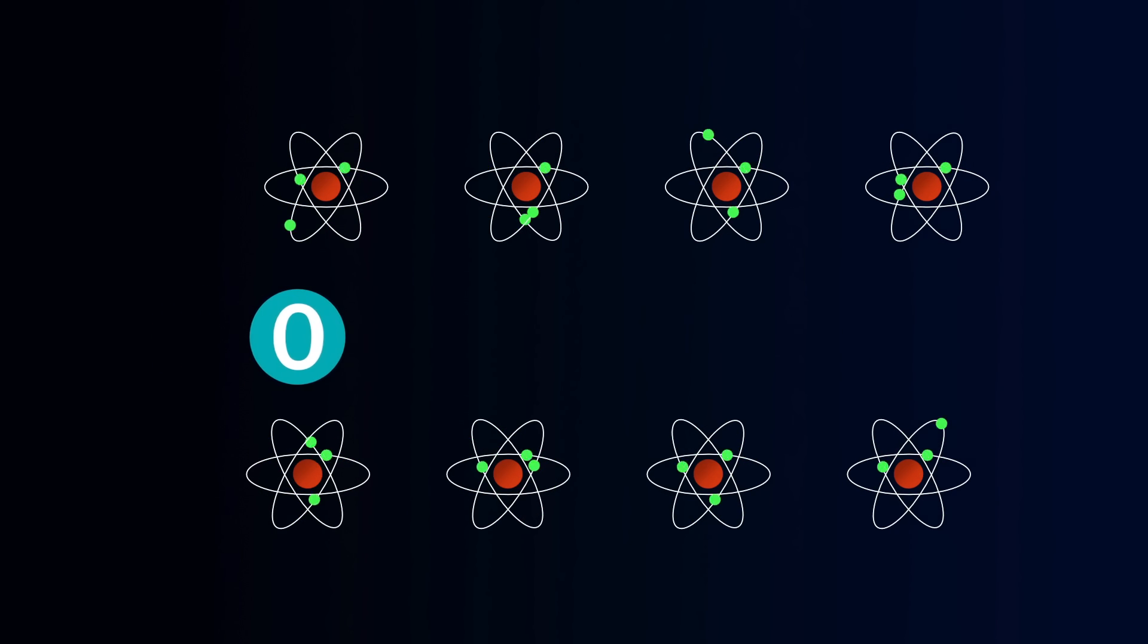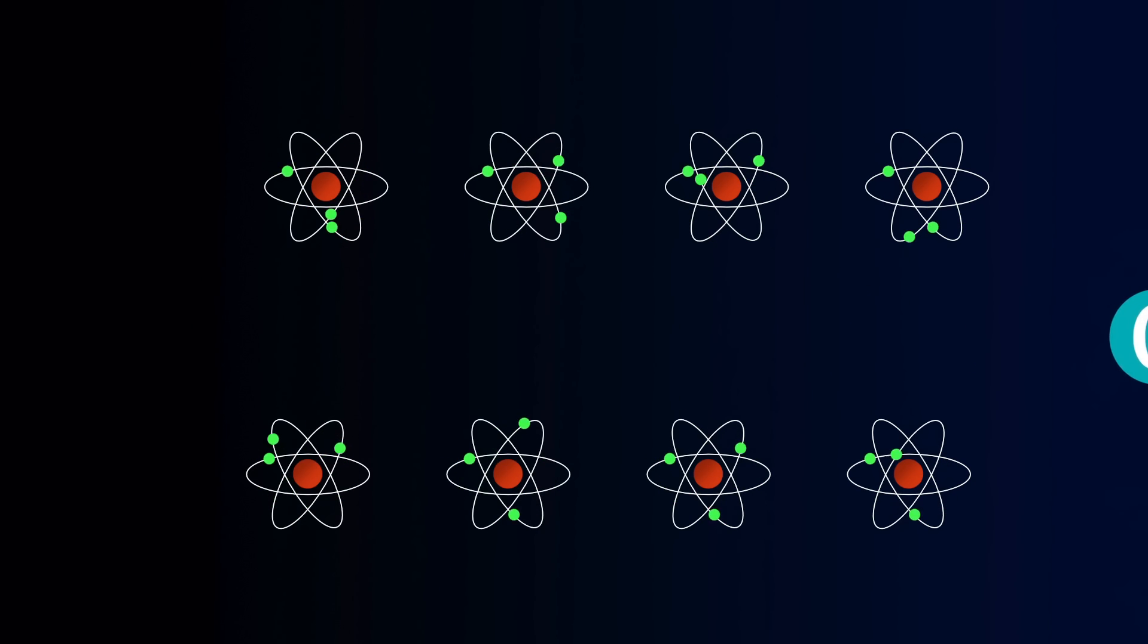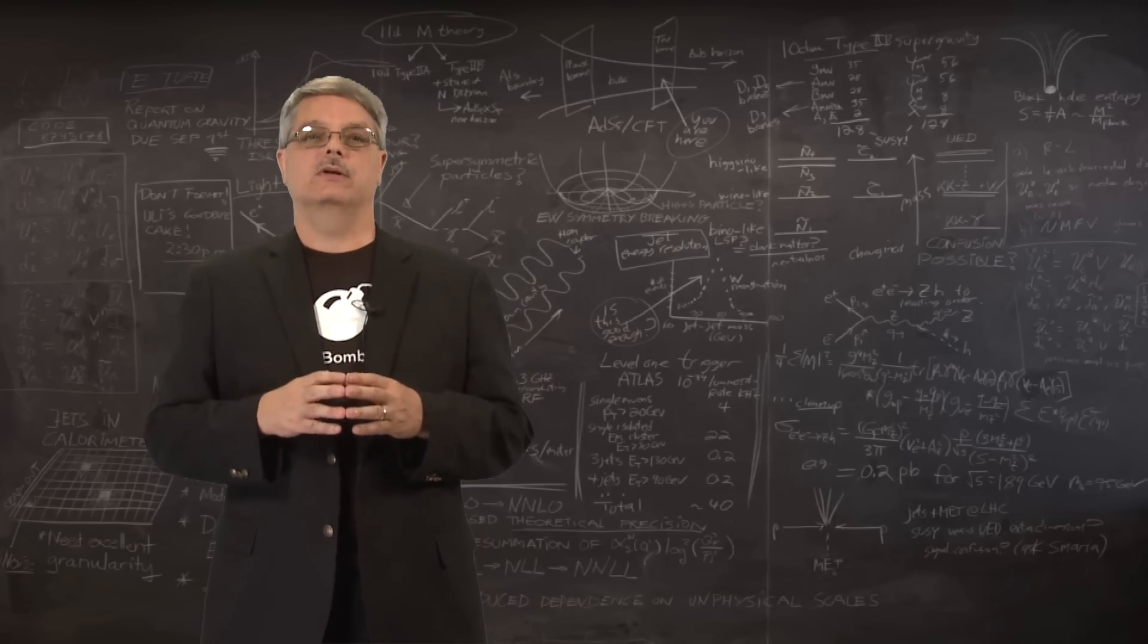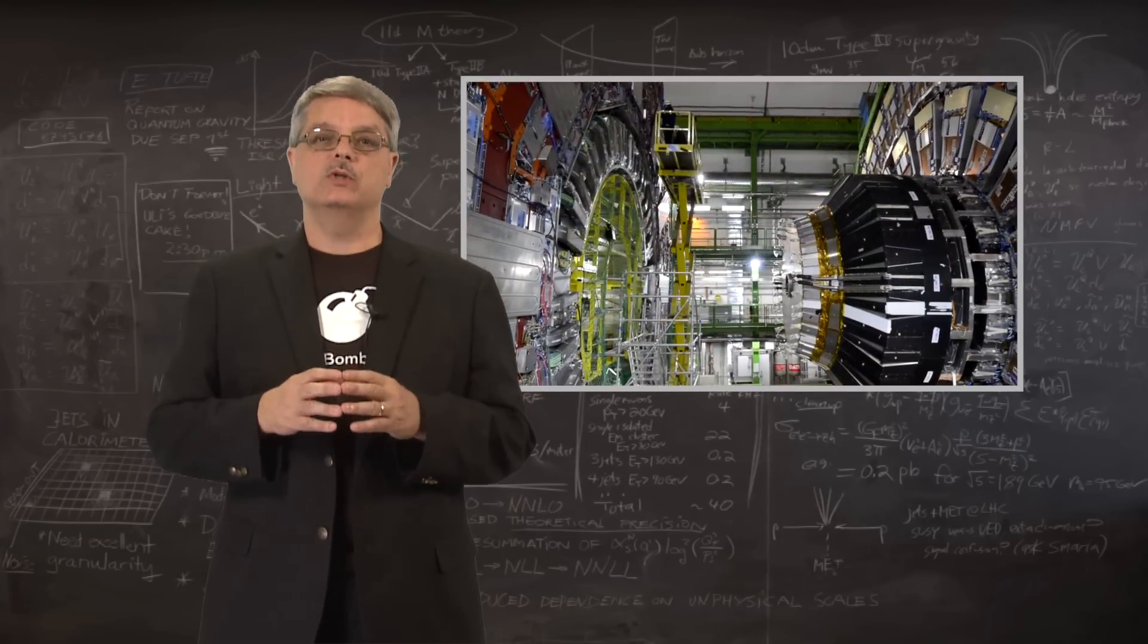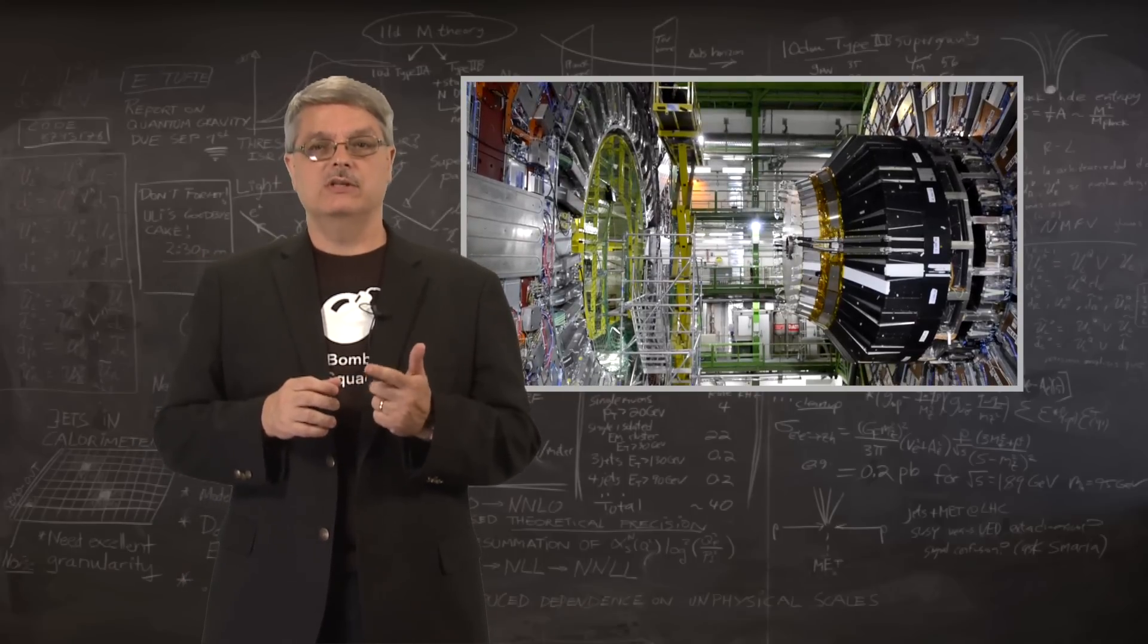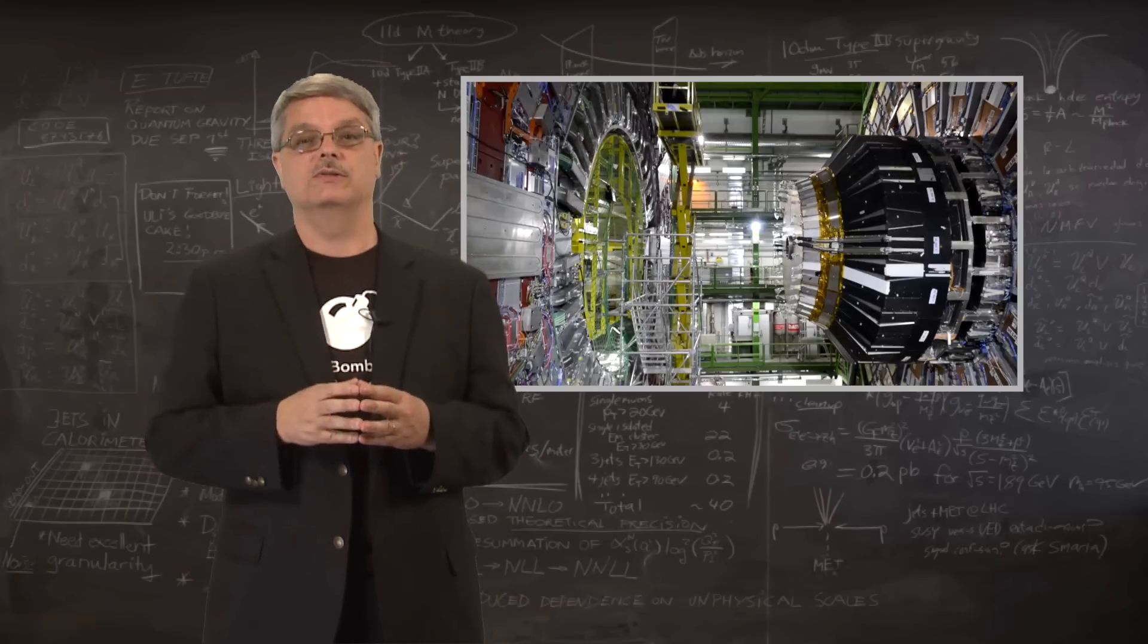However, photons, neutrinos, and some hadrons don't interact in this way, and such a detector wouldn't see them. In order to see these unseen particles, we need to add other detectors which react to different ways in which particles interact with matter. For instance, hadrons, electrons, and photons smash into atoms and do a most curious thing. They make more particles.